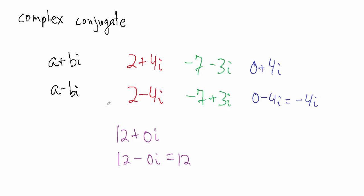Complex conjugates are usually denoted with a bar over the original number. So if we have a plus bi, then the conjugate is usually denoted with a big bar on top, and it equals a minus bi.